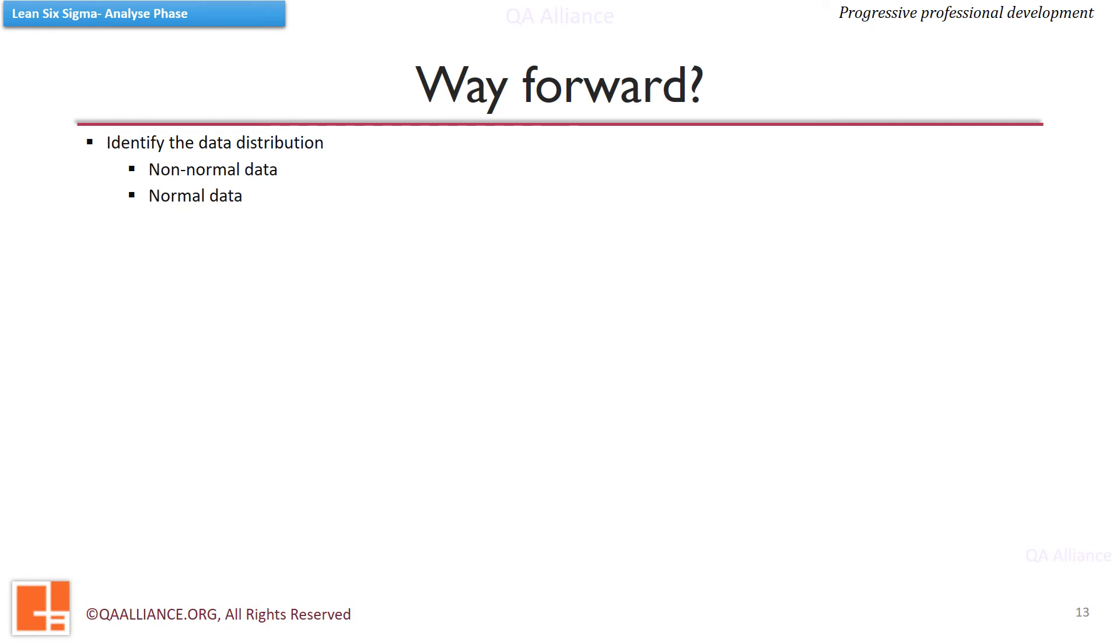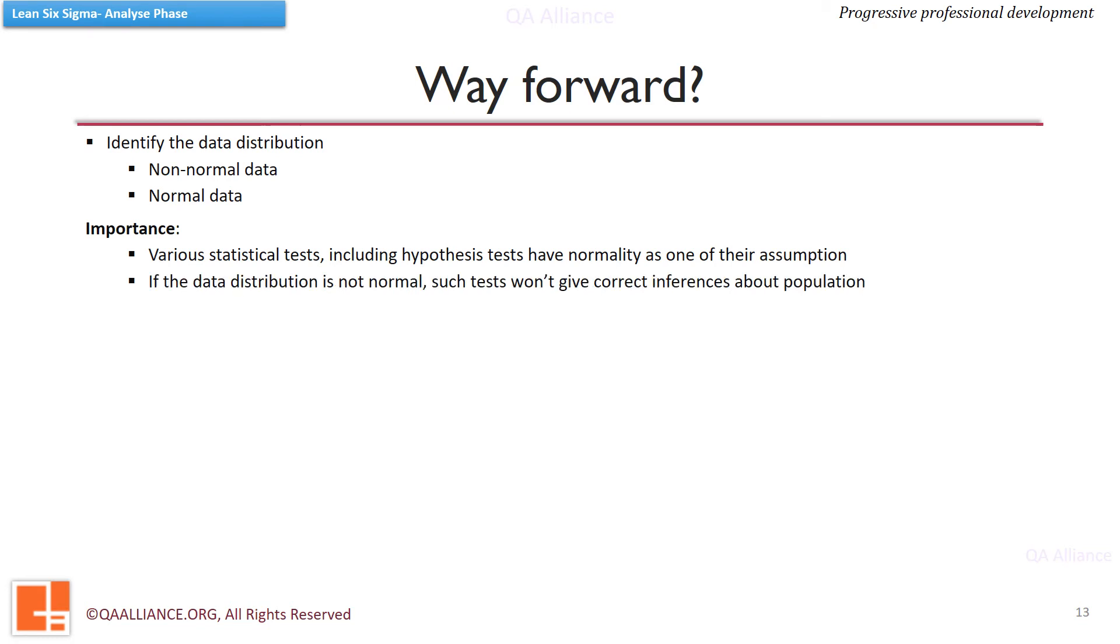So by now we know what are the characteristics which define a dataset to be normal or non-normal. In any statistical analysis, it is very important to find out if the data is normally distributed or not. There are many tests which have an assumption that data is normal. If we do not check the normality upfront, the tests won't give us reliable results. Let us see what are the steps to check for the normality of the data.